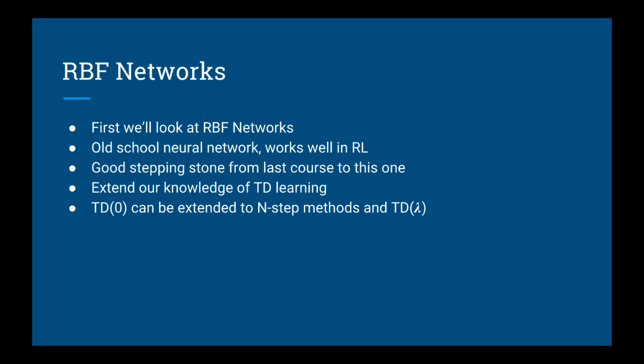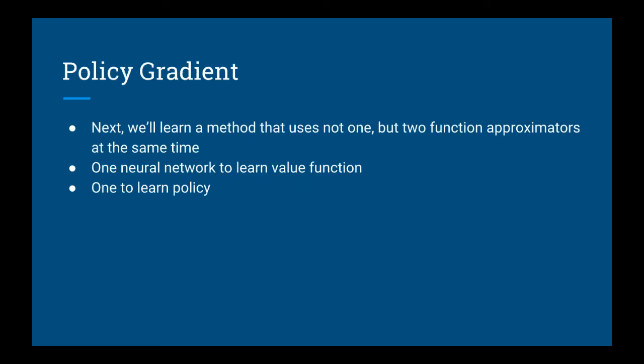After we learn how to build an RBF network, we'll extend our knowledge of temporal difference learning. So far we know about TD0, but we'll see how the idea behind TD0 can be extended to n-step methods and the more general TD lambda. After that, we'll look at a method that uses not one but two function approximators at the same time — one neural network to learn the value function, and one neural network to learn the policy. This is called the policy gradient method.